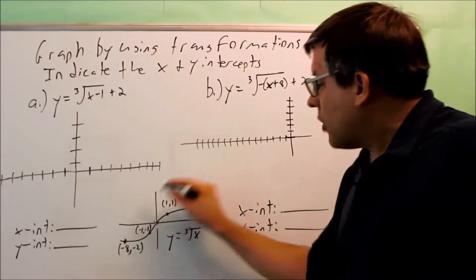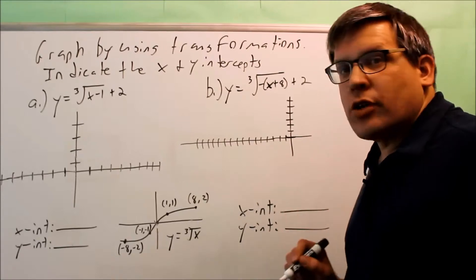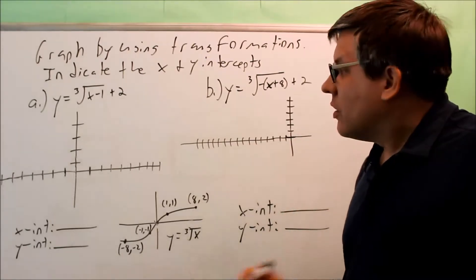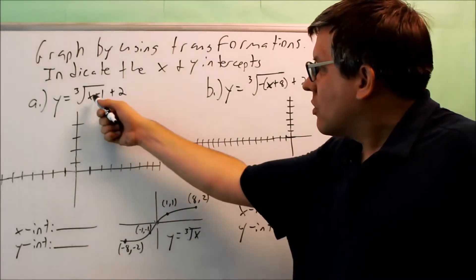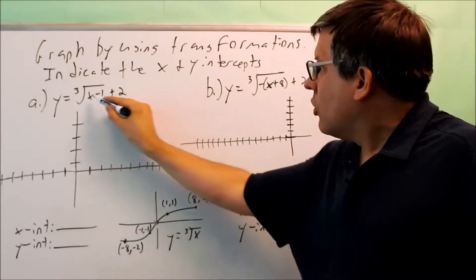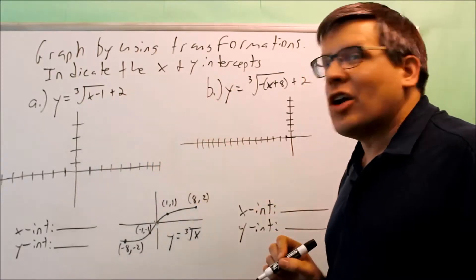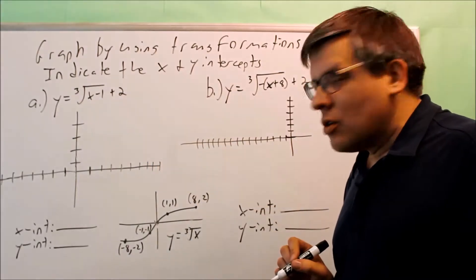Now we know what the base graph looks like, we're ready to do our transformations. This means that you're going to move the base graph one place to the right and up two units.